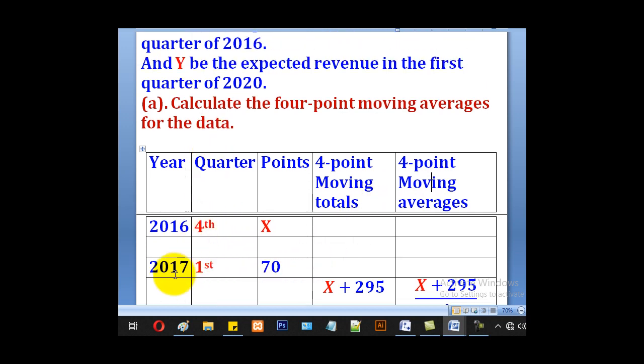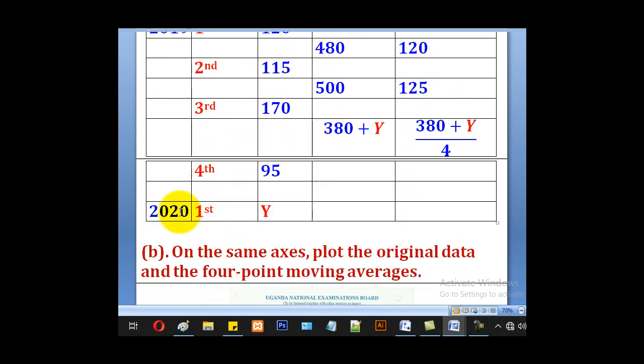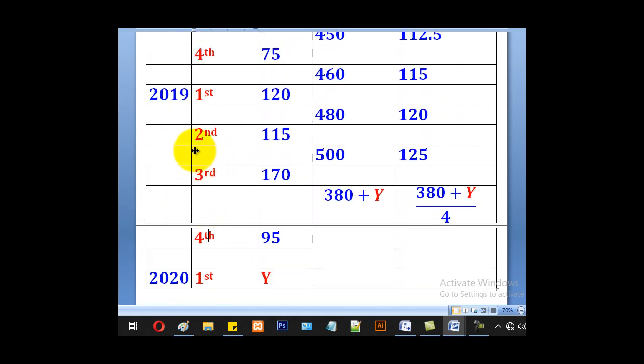Remember the 4th quarter of 2016 is before the 1st quarter of 2017, that's why it is here, and it's X. And the 1st quarter of 2020 is after the 4th quarter of 2019, and that is why it is there.